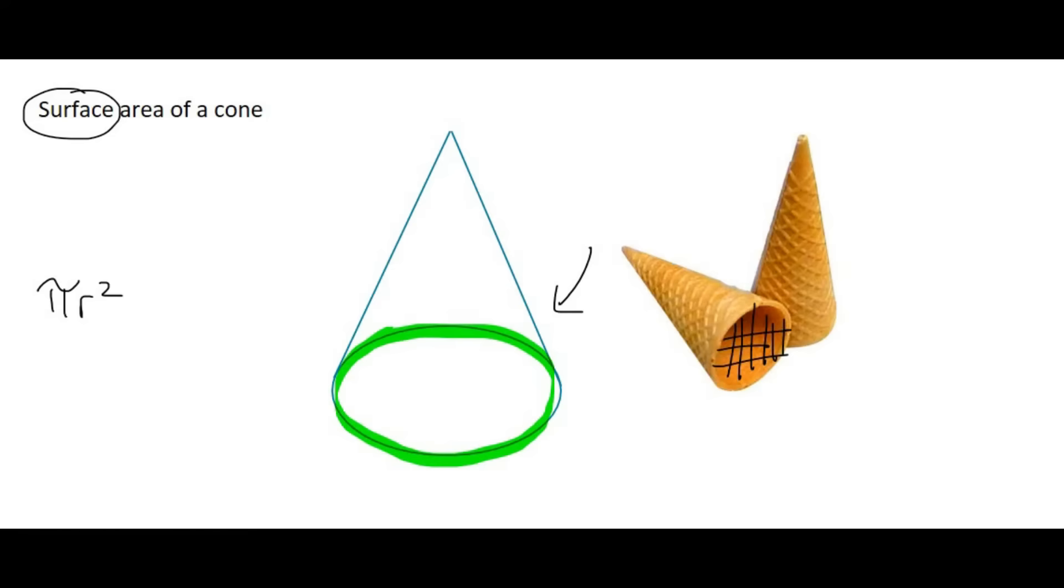But now, the interesting part is, how do we work out the area of this triangular part? All of this over here, for example, because this goes all the way around the cone,